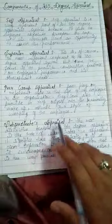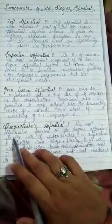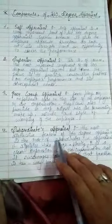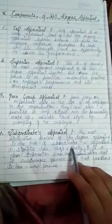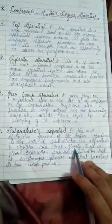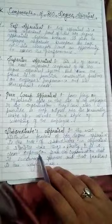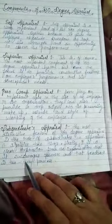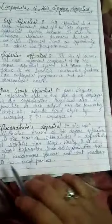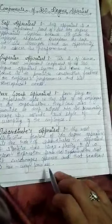Fourth is Subordinate Appraisal. The most distinctive feature of 360 degree appraisal is the role of subordinates in appraisal. It signifies two things. Firstly, it is a clear expression from the organization that it encourages openness and that feedback is a two-way process.